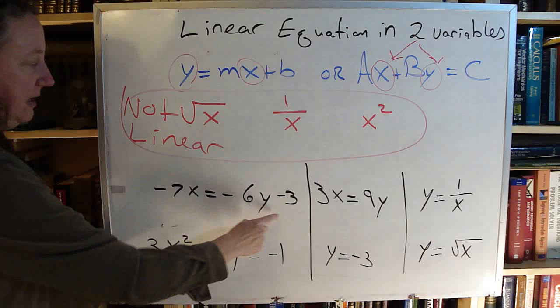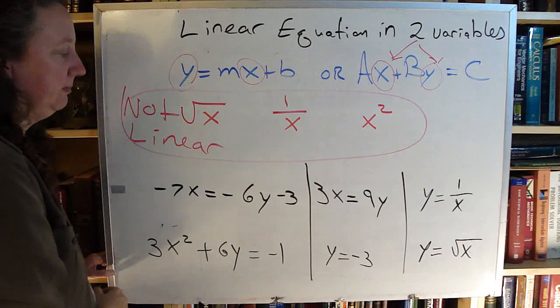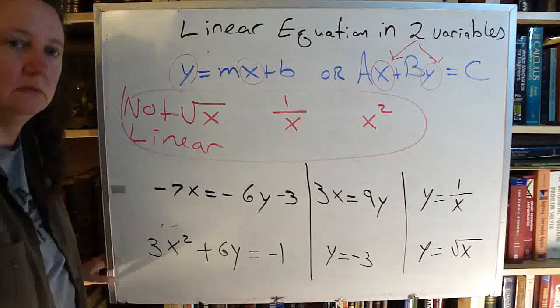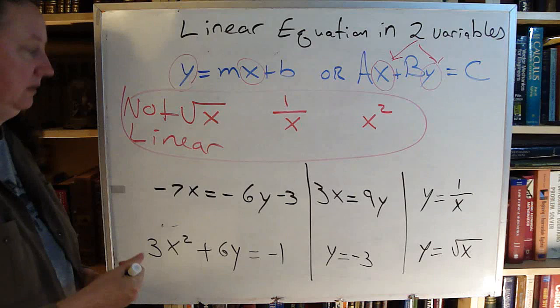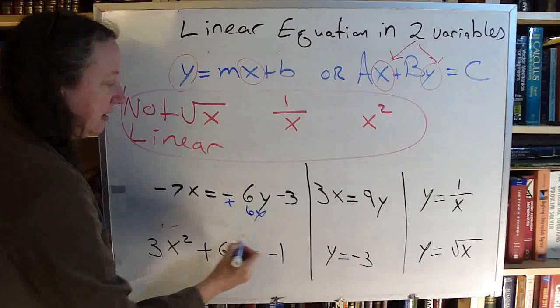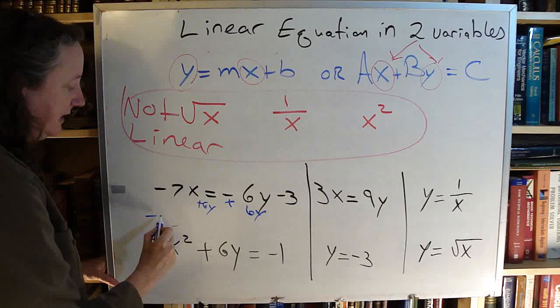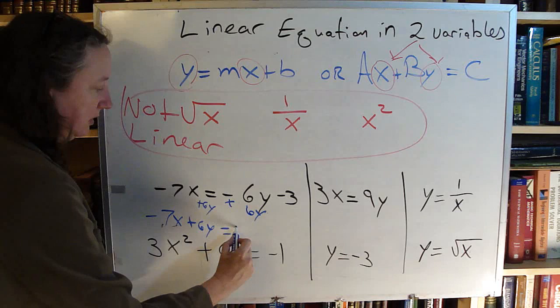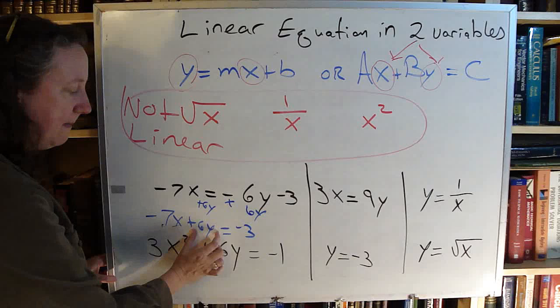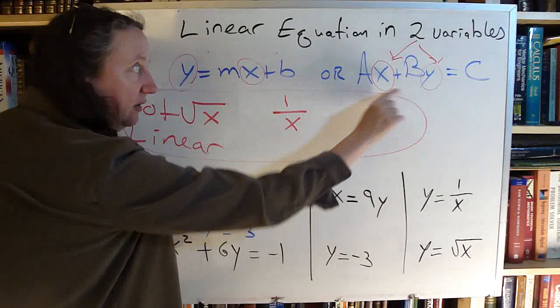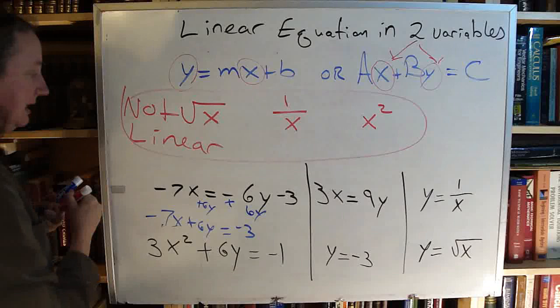So looking at our examples down here, I look at my equation and I say, first off, does it look like y equals mx plus b? No. Does it look like Ax plus By equals c? No. So can I make it look like one of those two? Yes. I'm going to add my 6y over to the other side of the equal sign. So now I have negative 7x plus 6y equals negative 3. So just by adding that 6y over, now I have Ax plus By equals c, same thing that I have up there. So now I can tell that this one is, yes, this is linear.